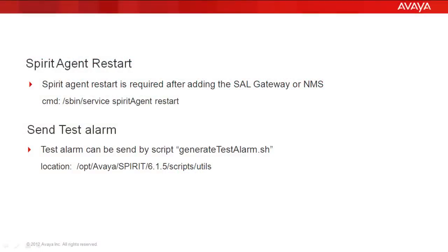Spirit Agent is a service used to send alarms to the Avaya data center or to a configured NMS which is configured to receive the alarms. It requires a restart because it takes the new configuration and details after the configuration of an NMS or a destination where we are sending the alarms.